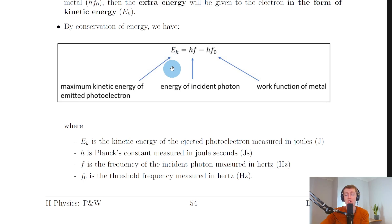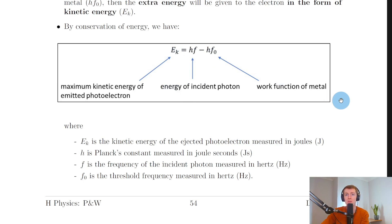The question might also ask you to calculate the maximum speed of the emitted photoelectrons. In that case, take the kinetic energy calculated from the previous equation and set it equal to ½mv² from EK = ½mv², then solve for v — the speed of the emitted photoelectrons. Now I'll show you two analogies to help you understand what we're talking about.